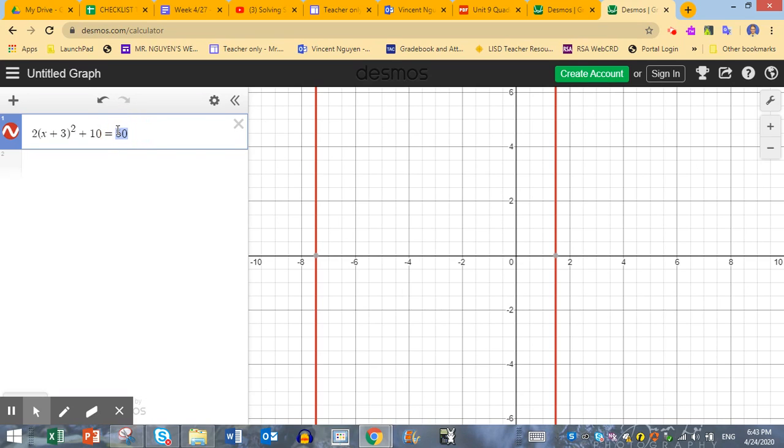And then I'm going to take this 50 away and put it on this side and combine it with the 10 to make negative 40. And then on the other side, it will be y equals. And so there's my quadratic graph, my parabola.